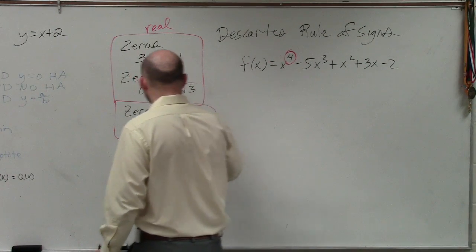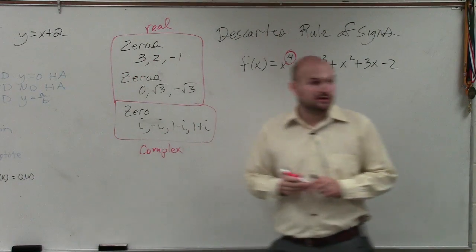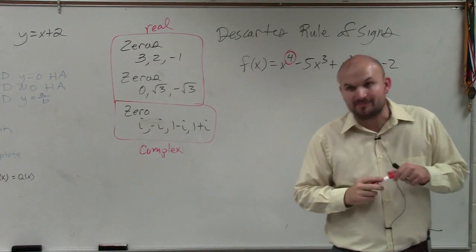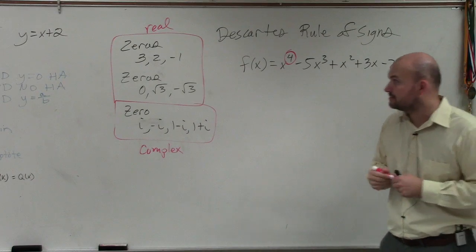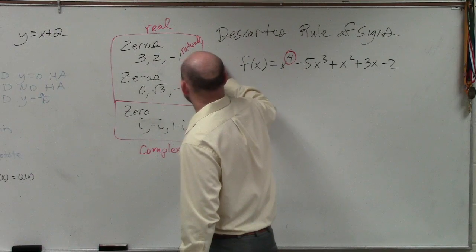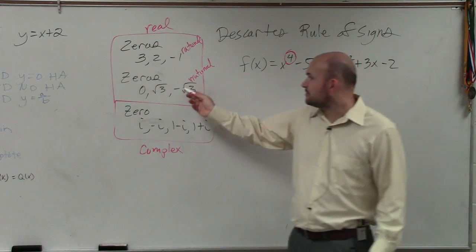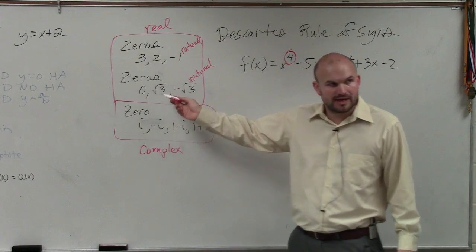These are complex. You cannot plot them on a real number line. You can plot them on a complex number line, but not a real number line. These are rational numbers. These are irrational. But they're both real, right? Some are negative, some are positive.